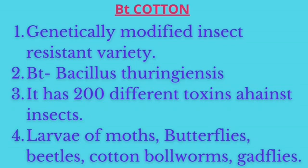What is BT cotton? It is a genetically modified crop variety and it has insect resistant property. The name BT denotes the bacterium Bacillus thuringiensis. This Bacillus thuringiensis is a soil living bacterium.